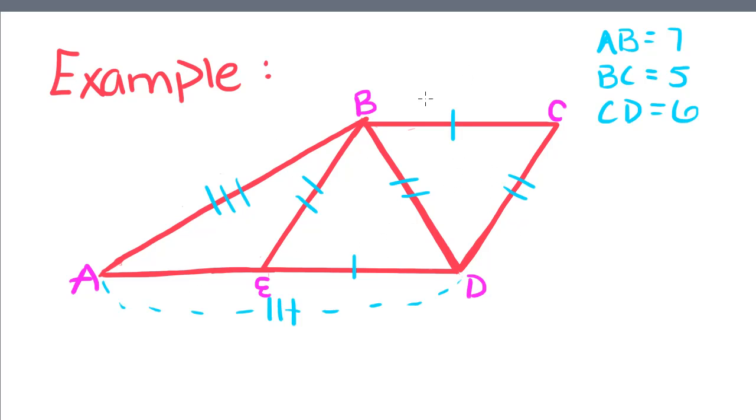We're told that AB, which is this big side right here, is equal to seven. The length of BC is equal to five, and the length of CD is equal to six.